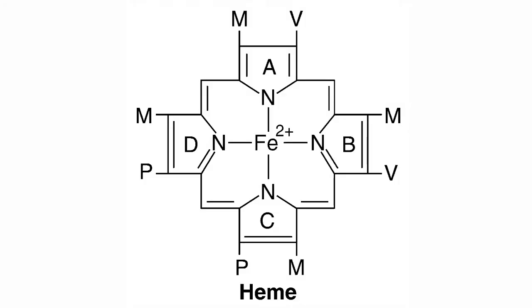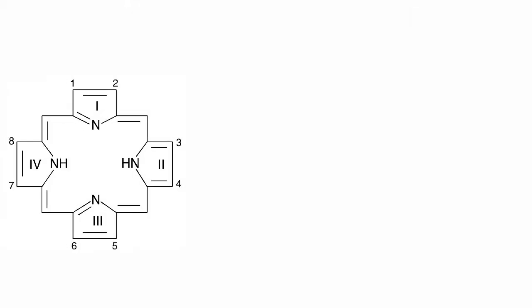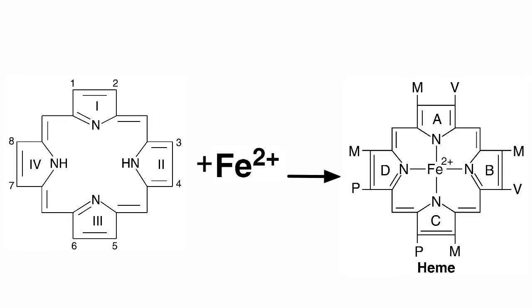Heme is an iron containing compound. It is a complex of protoporphyrin and ferrous iron. Protoporphyrin is a compound composed of four pyrrole rings which are linked by methane bridges to form a porphyrin ring.